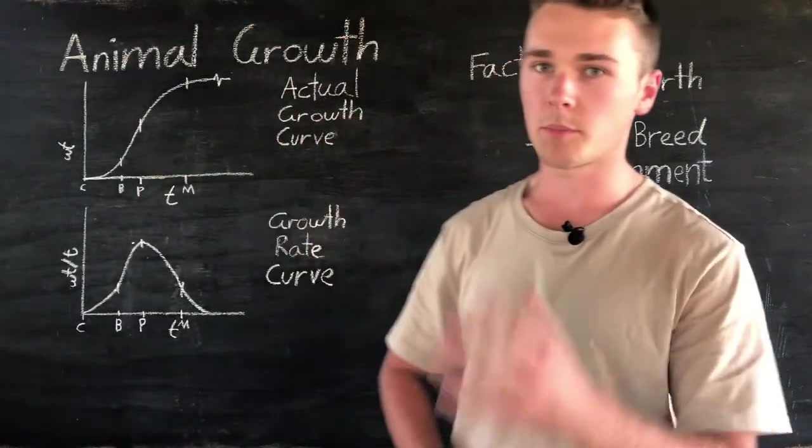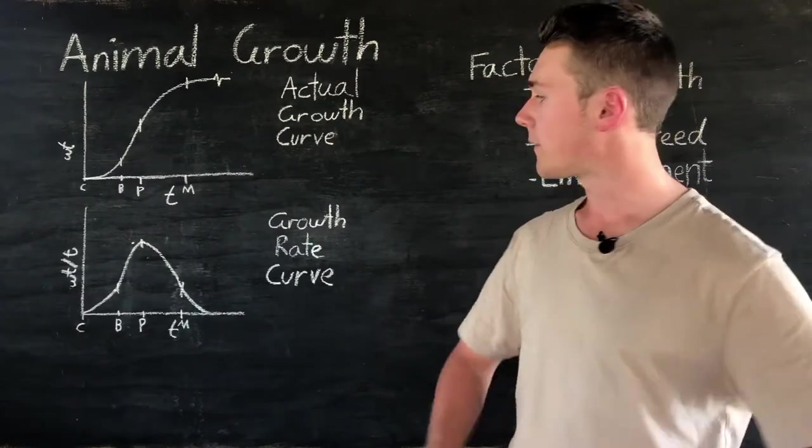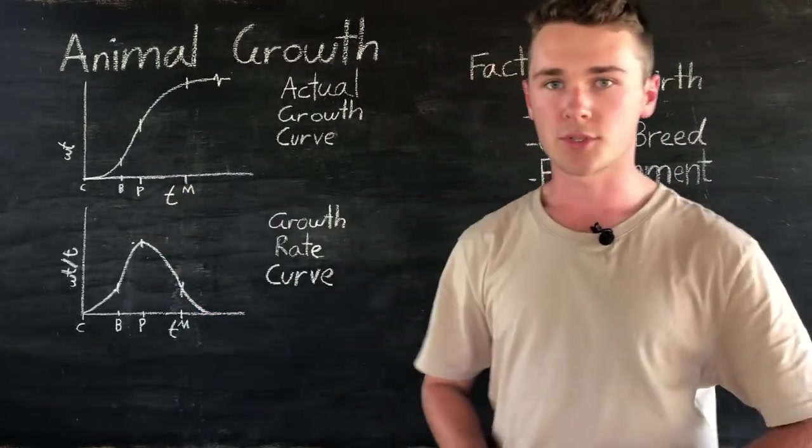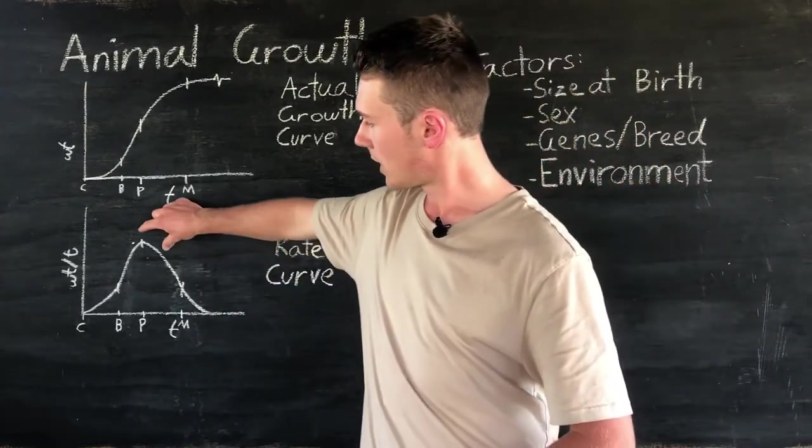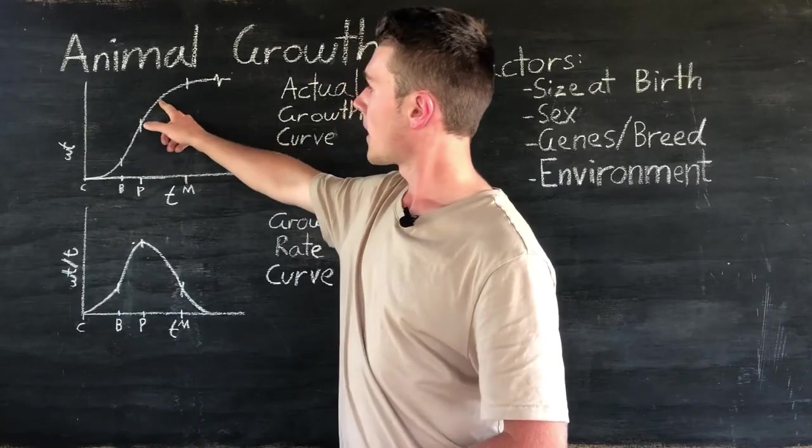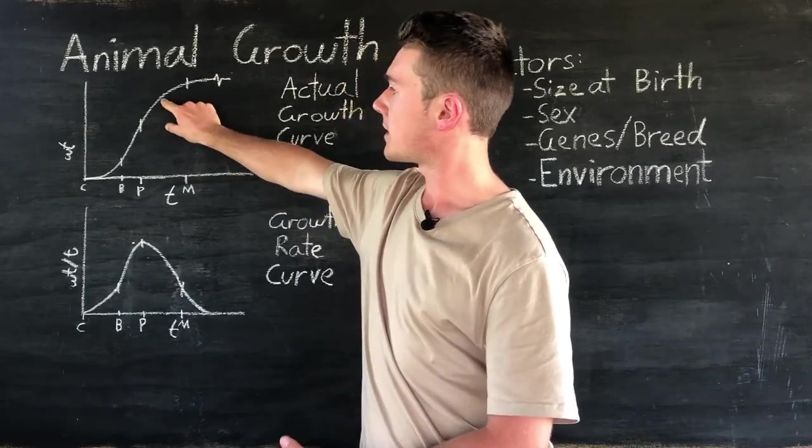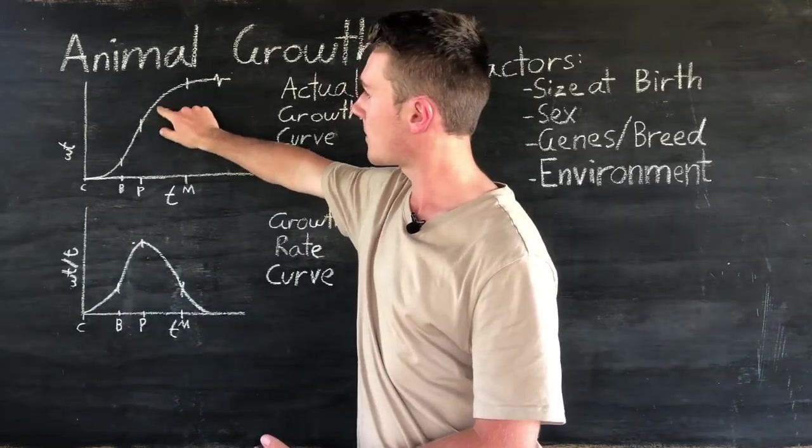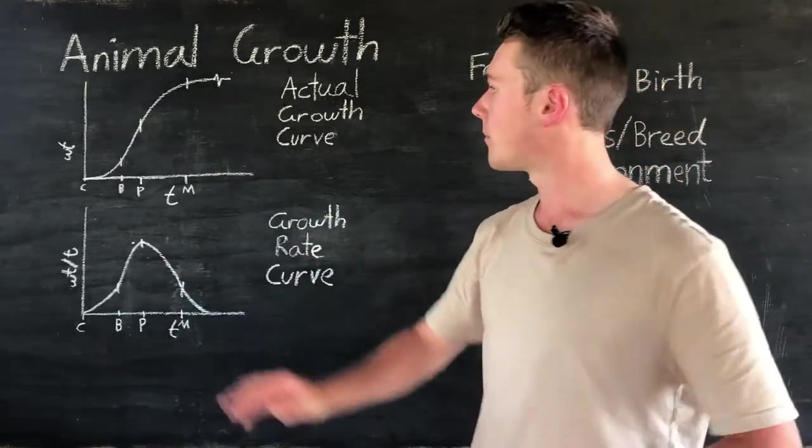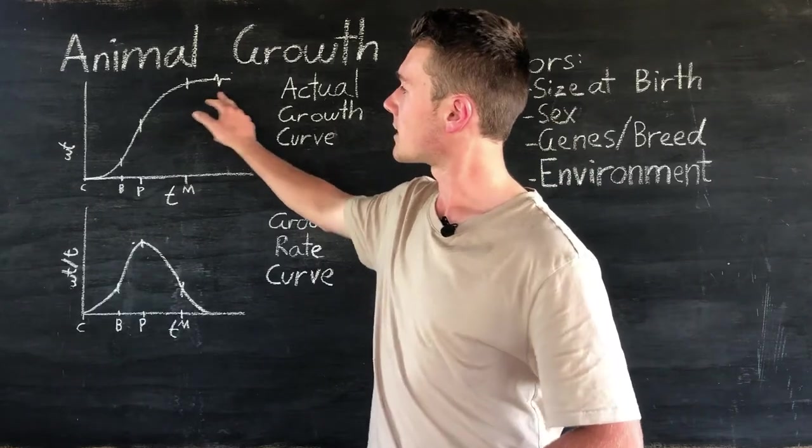So by knowing this we know the best way to run our farms is to maximize the amount of kilos we're producing per day by keeping animals in this puberty area which is where we're going to maximize our growth here. So we want to probably be selling around about just a bit past puberty so we can capture that high growth rate but not reduce our efficiency as it plateaus.